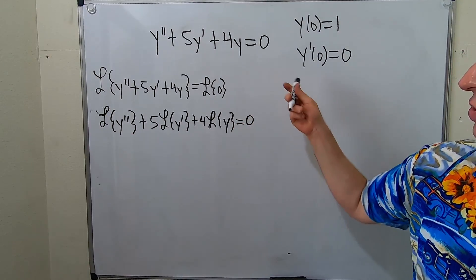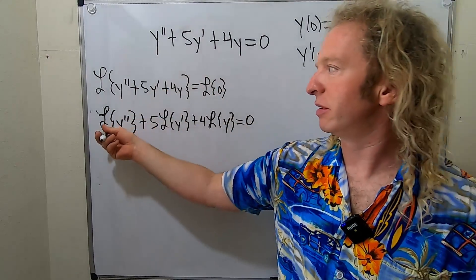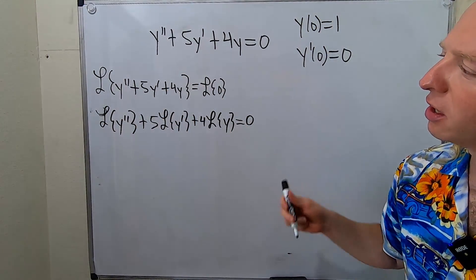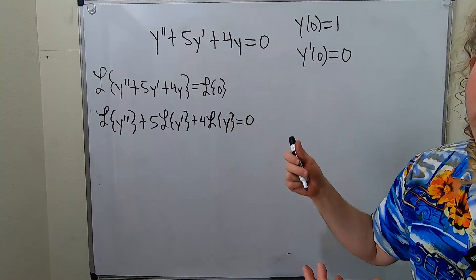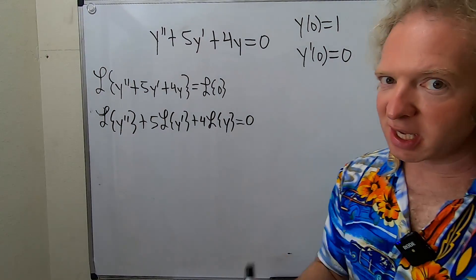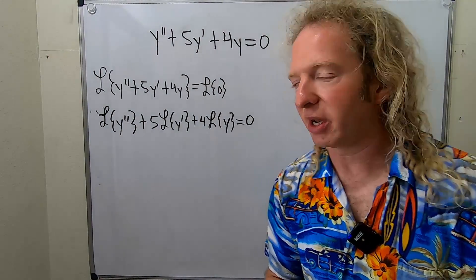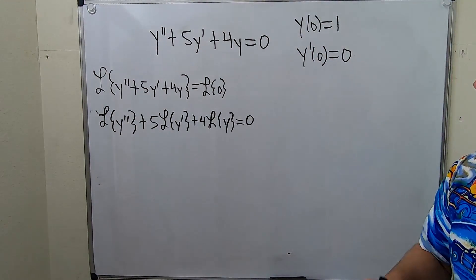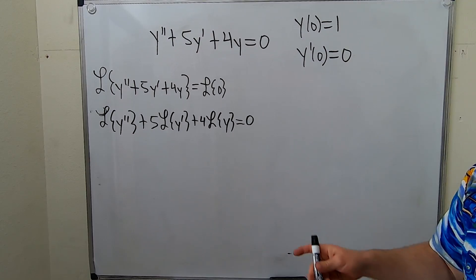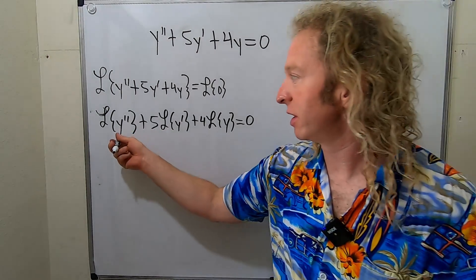You can just jump into this step — the previous step is not really necessary, I just wrote it so you see what we're doing. So again, step one: take the Laplace of both sides. The next step is to use the formulas.